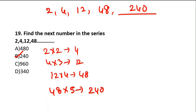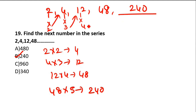240 is the answer — Option B. The pattern is: the first number is multiplied by 2, the second by 3, the next by 4, and then by 5 to get the next. So multiply by 2, then 3, then 4, then 5. Answer is 240, Option B.